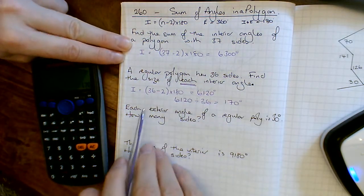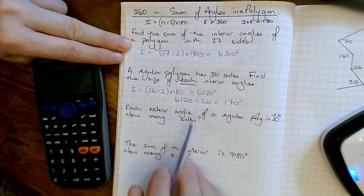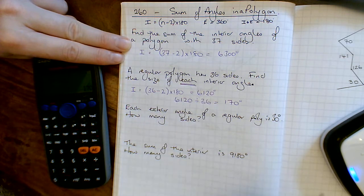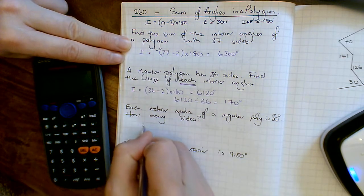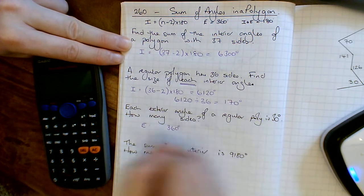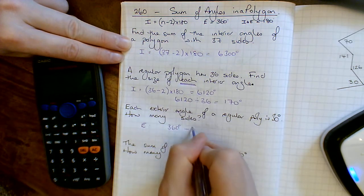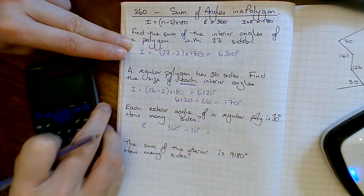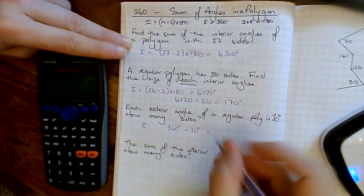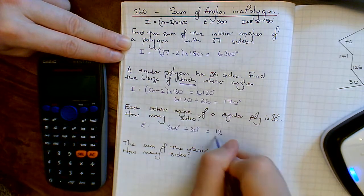Next one. Each exterior angle of a regular polygon is 30 degrees, how many sides does it have? So we know the exterior angles have to add up to 360, so we've got 360 degrees on the outside. How many 30s make 360? Divide this by 30 degrees, and we get the total number of angles. So 360 divided by 30 is 12, so there's 12 angles, and therefore there must be 12 sides.